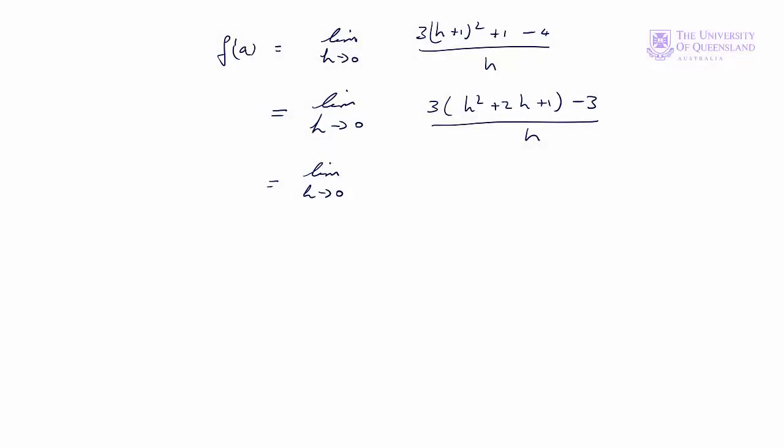So we'll simplify the numerator further, so we have 3h squared plus 6h plus 3 minus 3, over h. Well, our 3s cancel out there. Now we've gotten rid of those terms, we can divide through by h, and get rid of that squared sign.